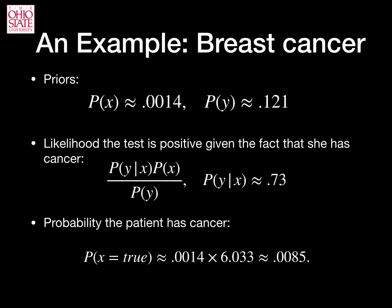Now, we wish to compute the probability that our patient has cancer. Recall the original expectation, or belief, is our prior probability, p of x, which is approximately 0.0014. But what happens if the mammogram comes up positive? In that case, we update the probability of this patient having breast cancer. The likelihood that the test is positive is given by cancer times the prior probability of x. Note that the likelihood is given by the probability of y given x over the probability of y — that is, the probability that the mammogram detects a nodule given that the patient has cancer, over the probability of detecting that nodule.